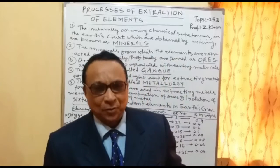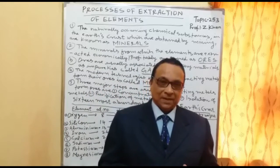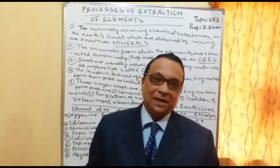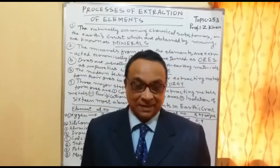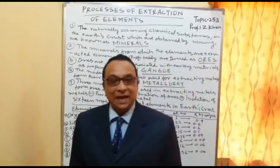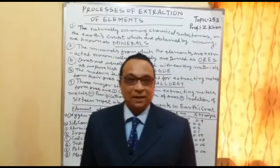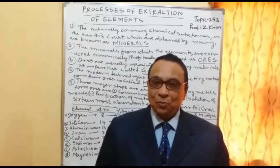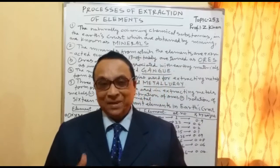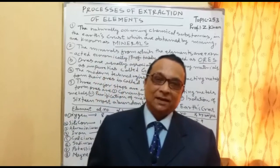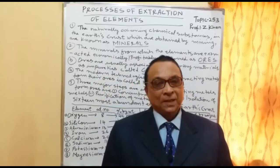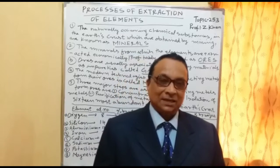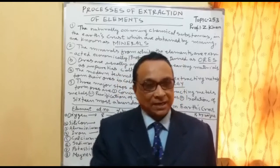Mainly there are two processes for extracting or isolating metal and non-metal elements: either by reduction or oxidation — meaning either by addition of electrons or by removal of electrons. Most metals are isolated and extracted in pure form by reduction, and non-metals are extracted by oxidation, meaning some electrons are removed.